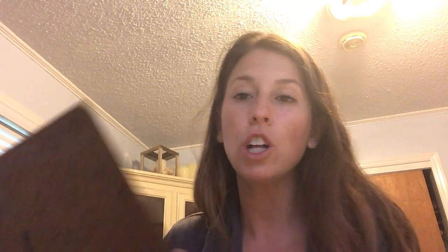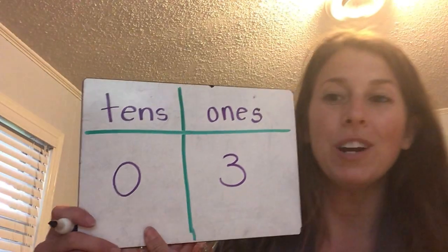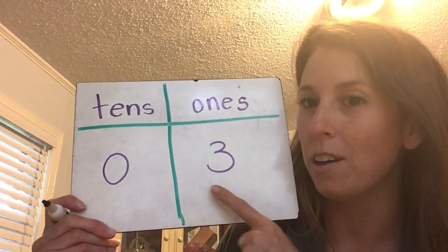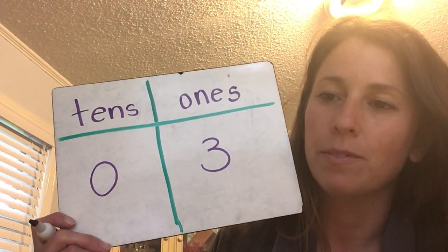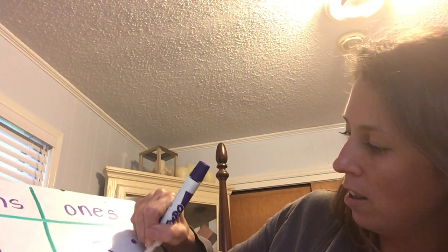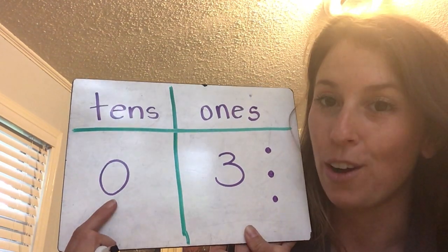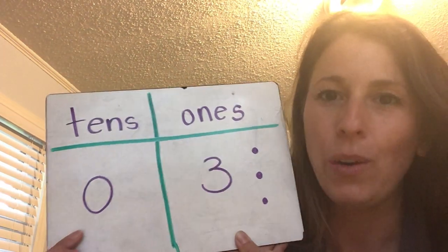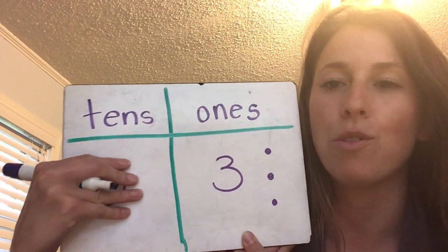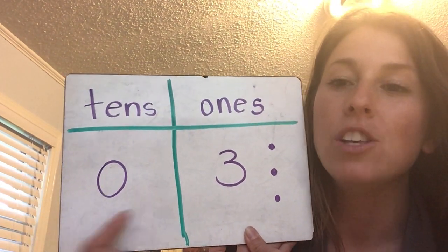I'm going to give you a clue. Use your chart with tens and ones to help you figure out my number. My number has zero tens and three ones. What is my number? The number is three. Zero tens and three ones made the number three. We put a zero there because if you only have three of something you haven't made ten yet. Zero means nothing. There's always an invisible zero in front of single-digit numbers — we just don't write it. So three has three ones and zero tens.